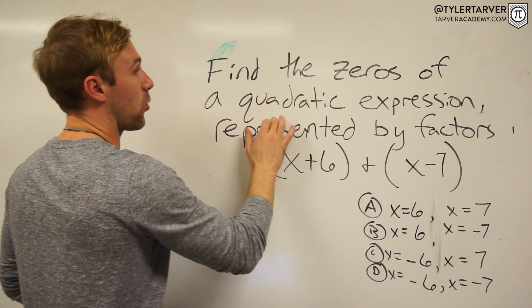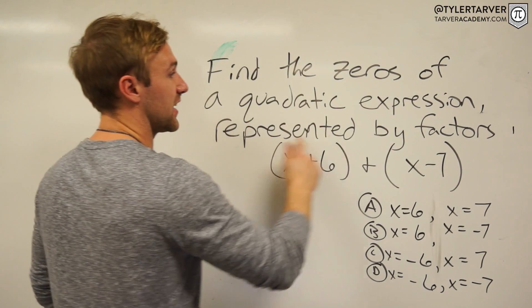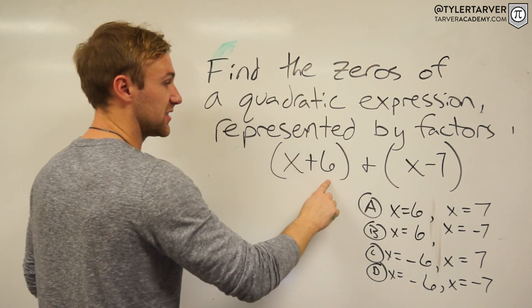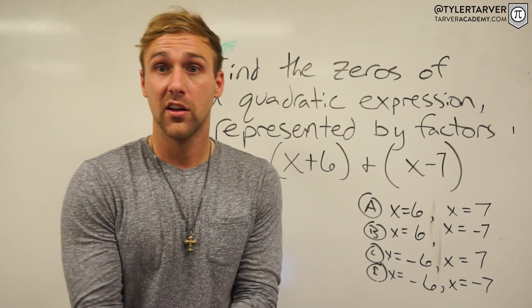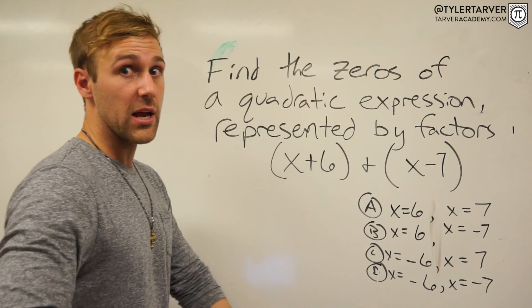Find the zeros of a quadratic expression represented by factors x plus 6 and x minus 7. Now I've got four options here. I'm going to give you the pause. Ready? Pause.